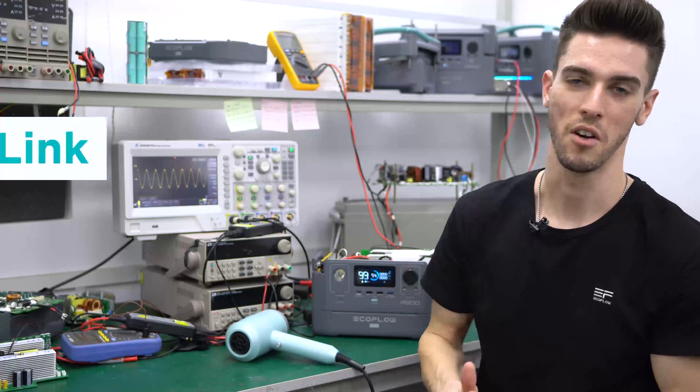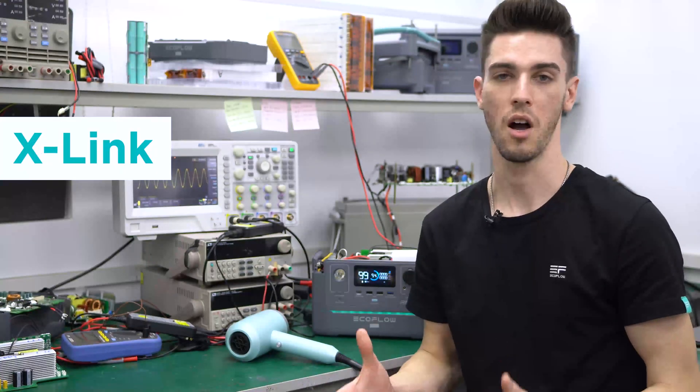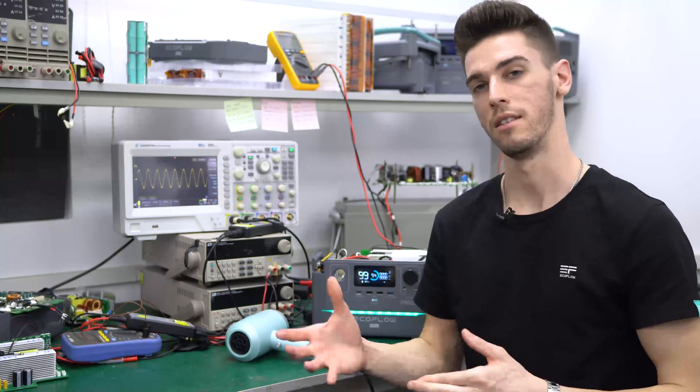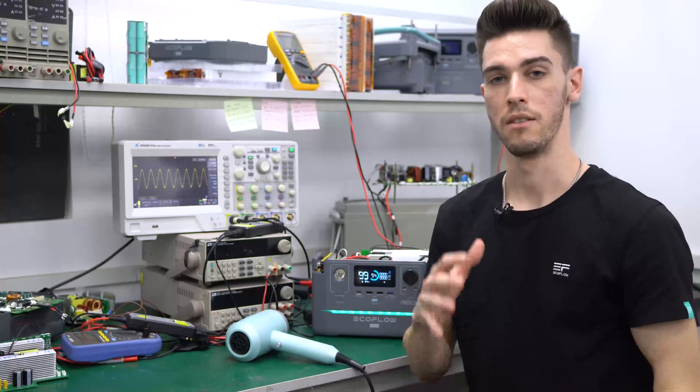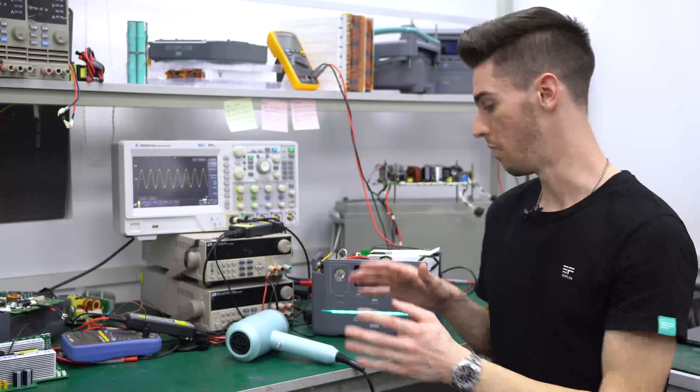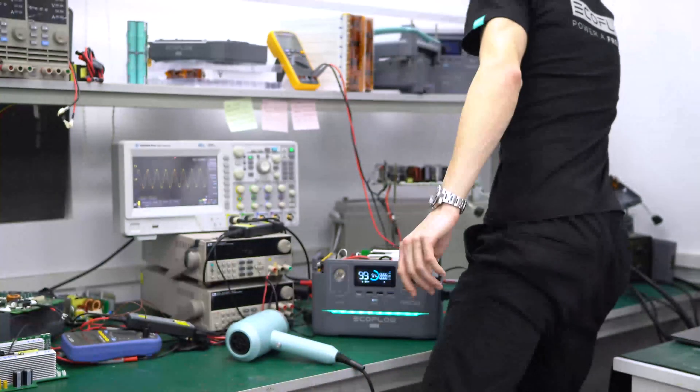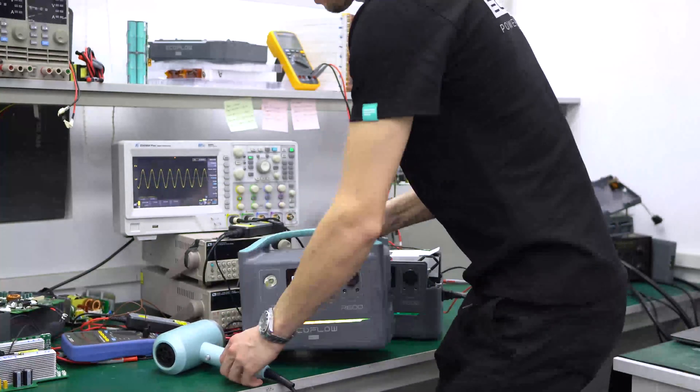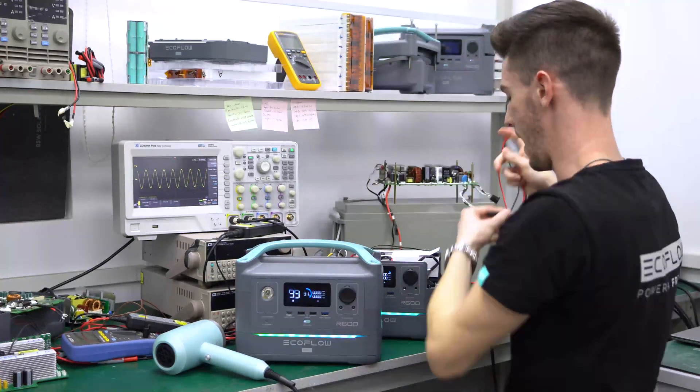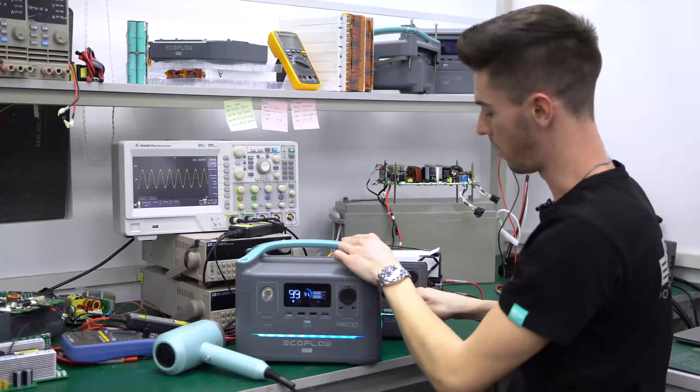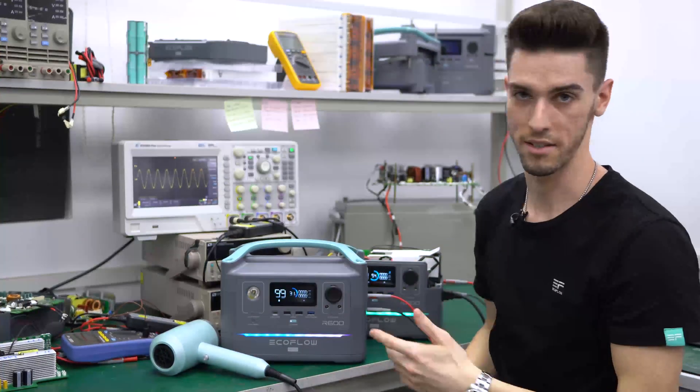All right, so last but not least is our X-Link feature. Now, this is actually our most complex feature and which is why you haven't seen this implemented in a portable power station like the R600. This does exist in things like gasoline generators, but never a portable power station like this. This gives us a big advantage and enables you to have a higher power output and capacity simply by connecting two R600s together. It's as easy as that.